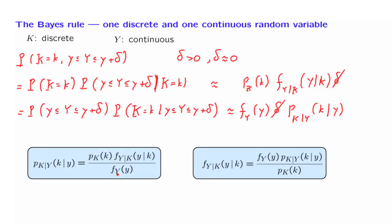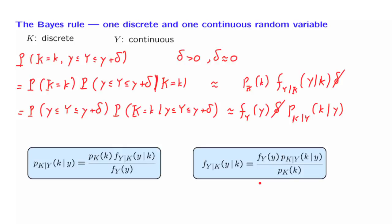In both versions of the Bayes rule there is also a denominator term which needs to be evaluated. This term is determined by using a suitable version of the total probability theorem. We have a conditional density of Y under different scenarios for the discrete random variable K, and we obtain the density of Y by considering the conditional densities and weighing them according to the probabilities of the different discrete scenarios.